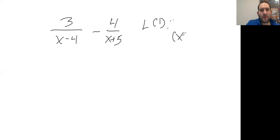Right away when you see this, you can automatically cross multiply these out. That means in our numerator it's going to be 3 times (x+5), and the other numerator is going to be 4 times (x-4).